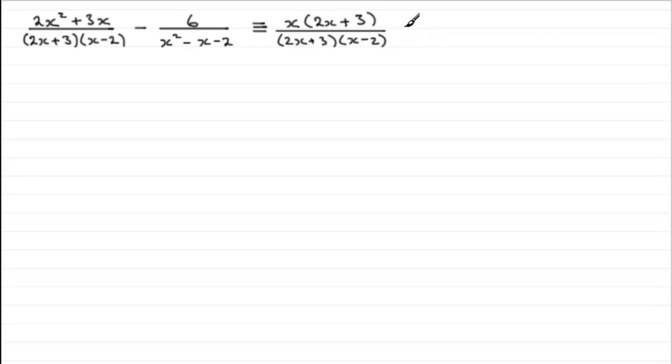Now for this next term, we've got minus 6, and the quadratic expression factorizes. There's no common factor here, but it's two brackets, and you're going to have an x and an x to give us the x squared.